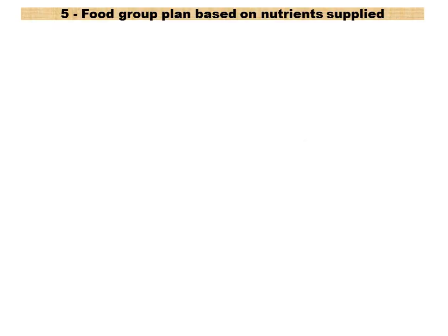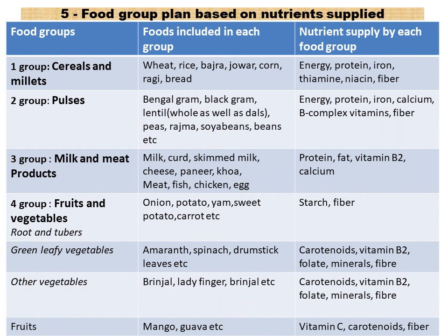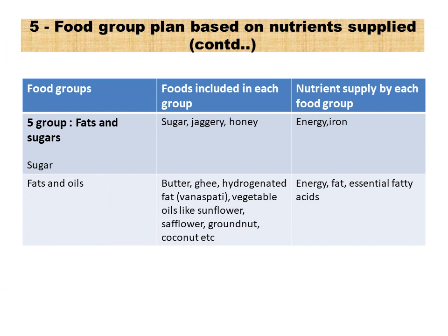The 5 food group plan is based on nutrients supplied, which would help meet the nutritional requirements or the RDA. It is also categorized by types of foods — for example, all cereals and millet products are in the same group and provide the same nutrients. Pulses are another group. Milk, milk products and meat products are in the same group, though not of the same type, as they provide the same nutrients. All underground vegetables are grouped under roots and tubers, and all green leafy vegetables are in one group.